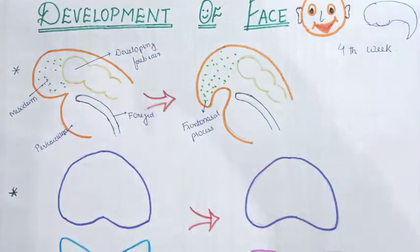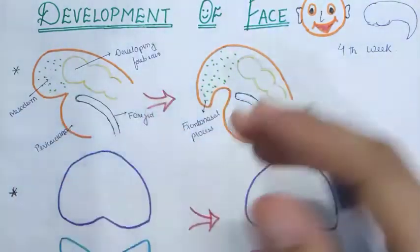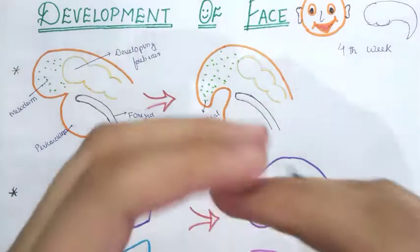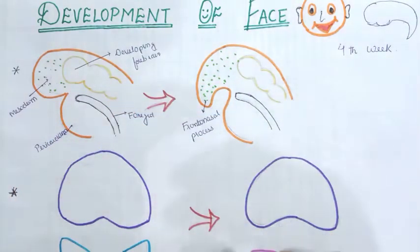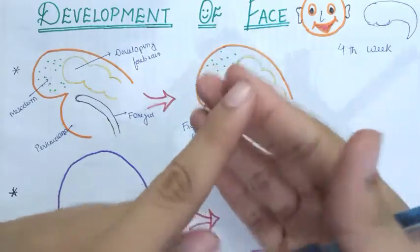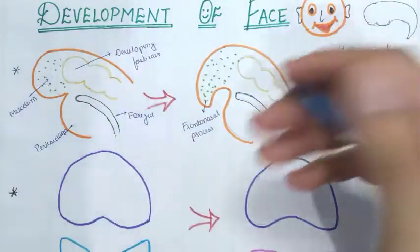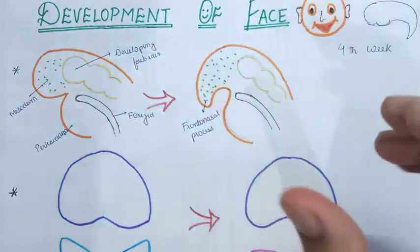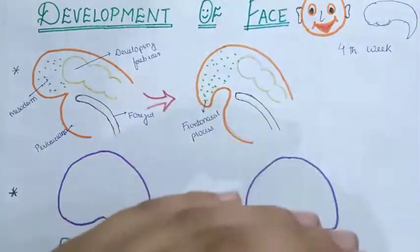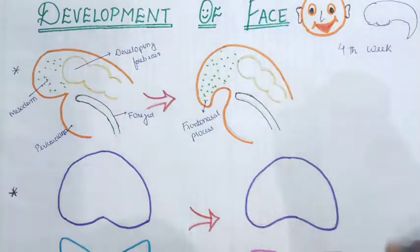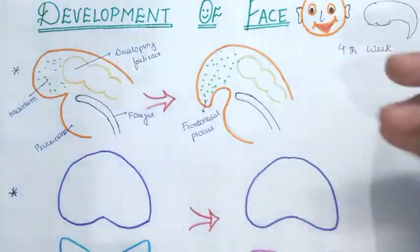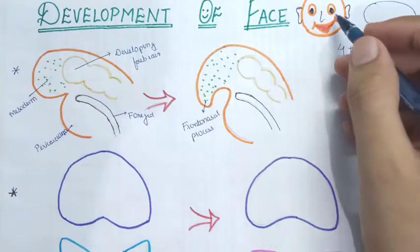You might wonder why I am telling you all these basics before discussing the face. These structures form the basis of face development. When we say development of the face, think of all the structures it contains: eyes, nose, mouth, cheek, chin, forehead, upper lip, lower lip. We need to form eye sockets, nasal cavity, external nose, lateral wall, mouth, upper lip, lower lip, ear auricles, cheek, and chin.